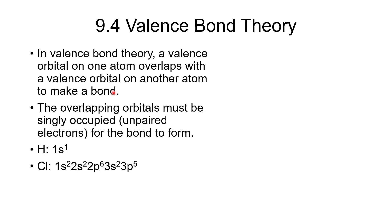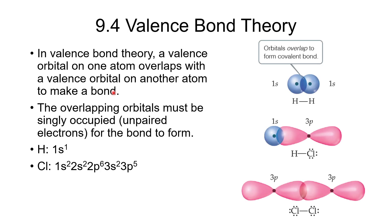That one singly occupied orbital on chlorine can overlap with the 1s orbital on hydrogen. We can also have two hydrogen atoms whose 1s orbitals overlap, or an overlap between a 1s orbital on hydrogen and one of the 3p orbitals on chlorine. We can also have two chlorine atoms whose 3p orbitals overlap. We can almost always explain covalent bonds in terms of which orbitals are overlapping.